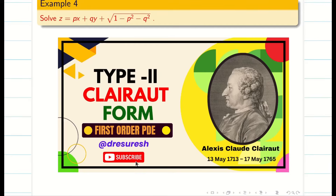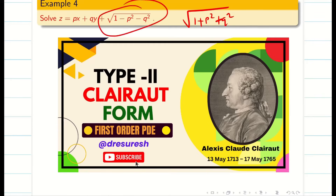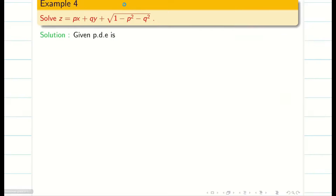Students, as a continuation of the previous video, we are going to solve some more problems on Clairaut's form. In the previous video, we dealt with 1 minus 1 plus p square plus q square. In this video, we are going to deal with the problem on square root of 1 minus p square minus q square.